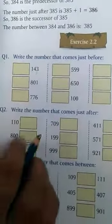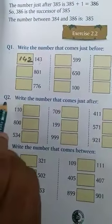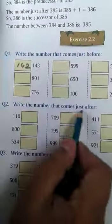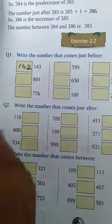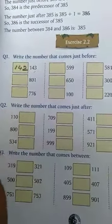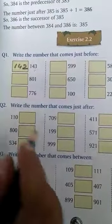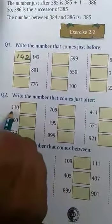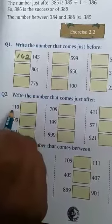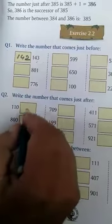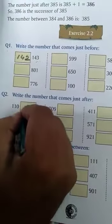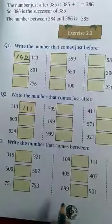Now next you see, here you see. Question number 2 is write the number that comes just after. Means you have to write the number comes just after the given number. Now here a question is 110, so after 110, what will be the answer? 111. 111 will be your answer.